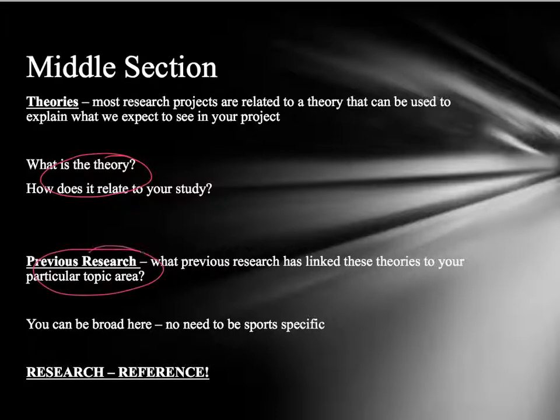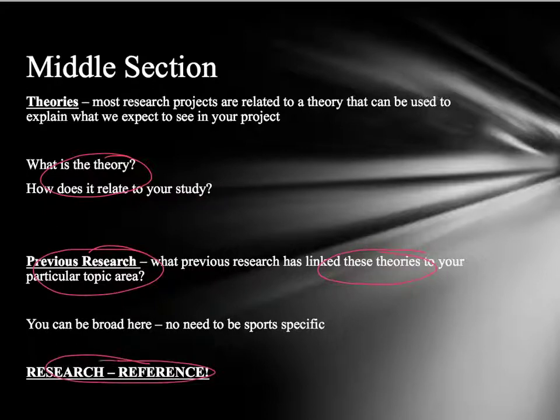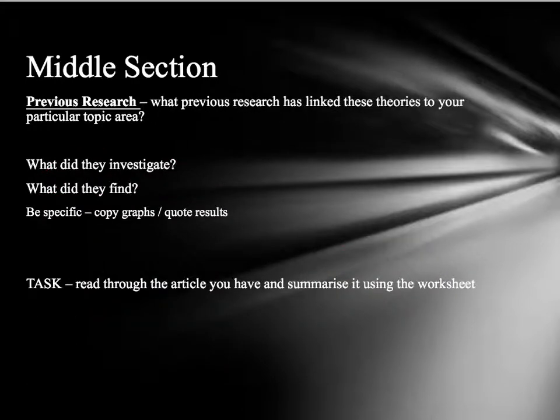Importantly, I also need to look at what has been done before. I need to go through and cover the previous research that's been done and link that to the theory I've discussed earlier — so, what research has already been done on penalties and psychology? Again, if I'm researching I need to reference. What's really important about the previous research is that we make sure we've got the level of detail that allows the reader to fully understand what's going on.